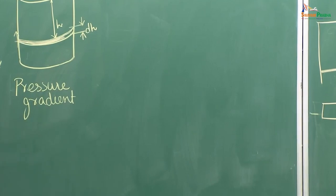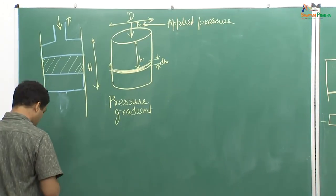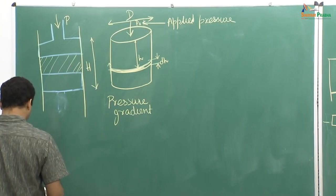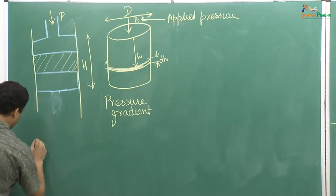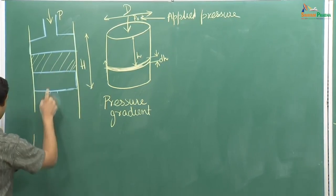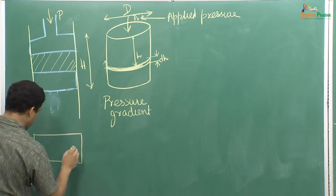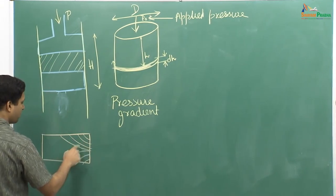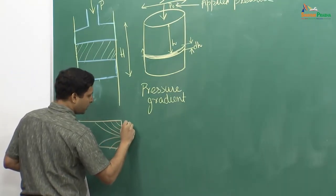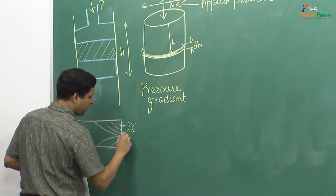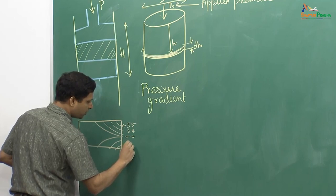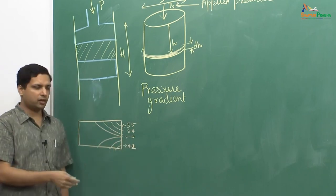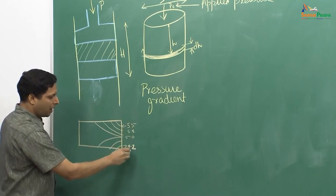Another thing is, if you want less pressure distribution and less density distribution for the same dimensions, there is one way: use a double-ended piston. This is a single-ended piston approach. Now, let us draw how a schematic density distribution looks like. We are looking at the compact, and because of friction on the surface, the density distribution would look something like this — very high density at the top, which keeps on reducing as you go down.